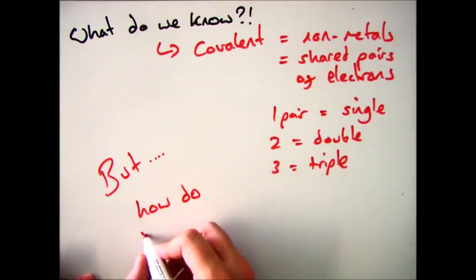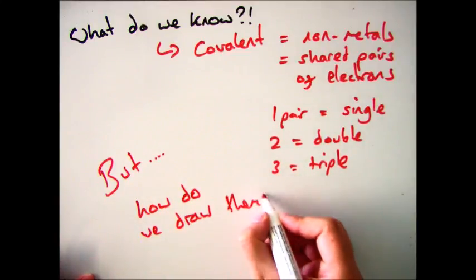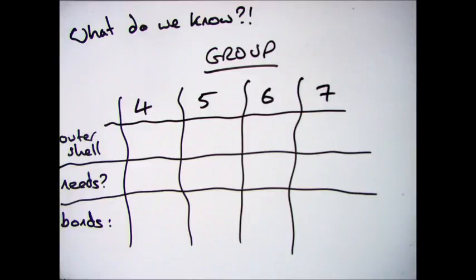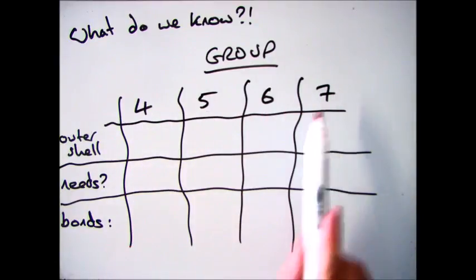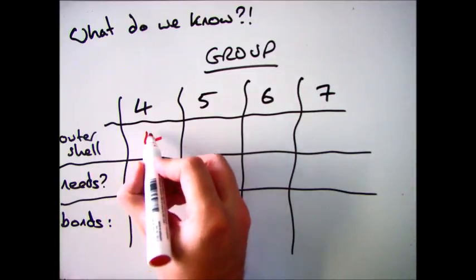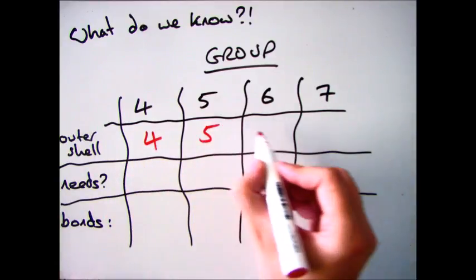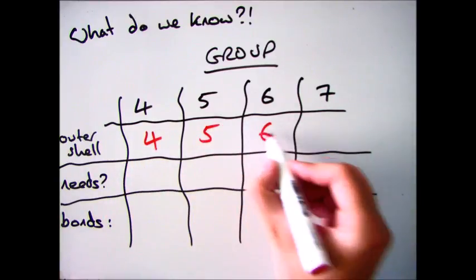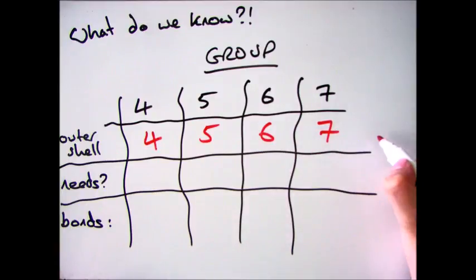But the question is, how can we actually take that information and draw them? To figure that out, we need to look at the periodic table and recap how many electrons are in the outer shell. So if it's in group 4, it's 4 in the outer shell; 5 is 5; 6 is 6; and 7 is 7.